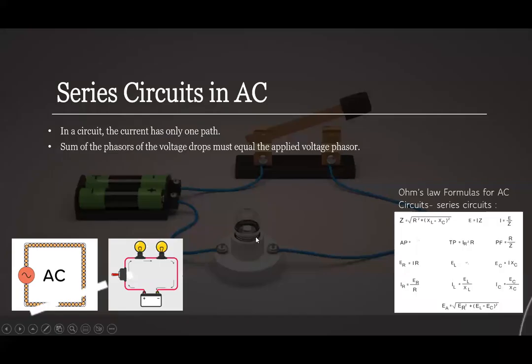Okay, series circuits in AC. In a circuit, the current has only one path. Let us consider the decorative string light as a sample of a series circuit. In the picture, this is nothing but a series of multiple tiny bulbs connected in series. If one bulb fails, all the bulbs in the series do not light up. On the side, you can see some formulas for series circuits in AC.